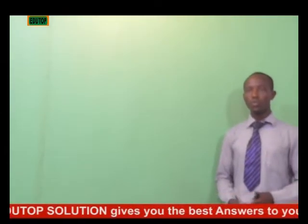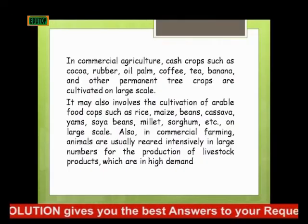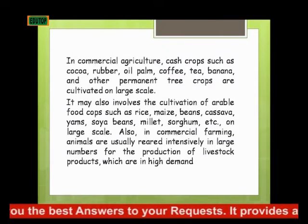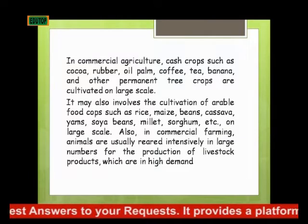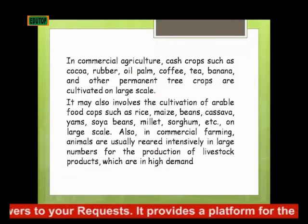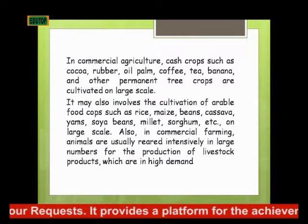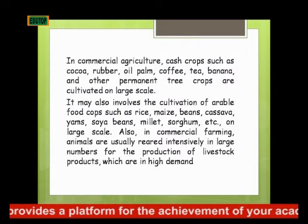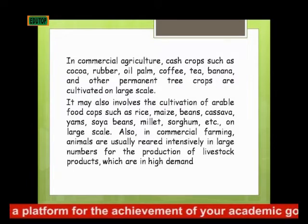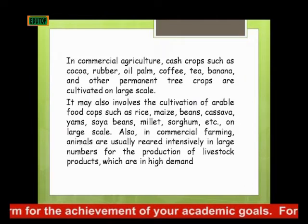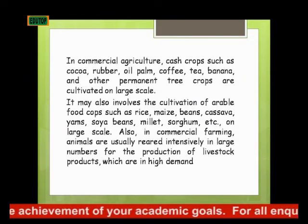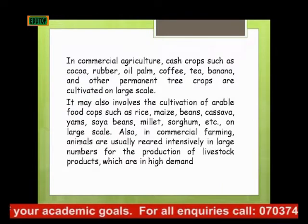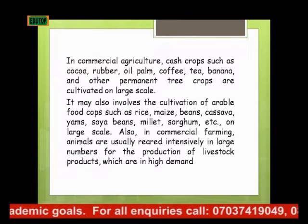In commercial agriculture, cash crops such as cocoa — used in production of beverages — rubber, oil palm, coffee, tea, banana, and other tree crops are cultivated on a large scale. It may also involve the cultivation of food crops like rice, maize, beans, cassava, yam, soya beans, millet, and sorghum on a large scale, enabling export just as Nigeria imports.